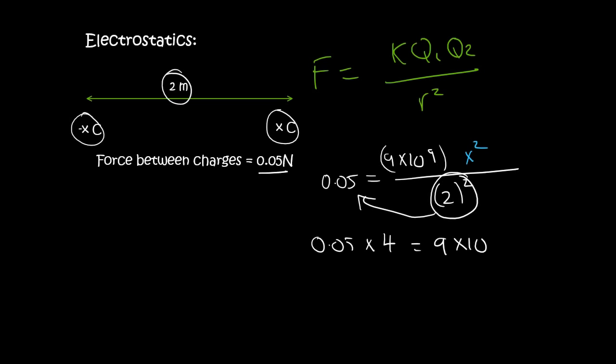And that's going to equal 9 times 10 to the 9 x squared. We can then divide this on the other side. So it'll be 0.05 times 4 over 9 times 10 to the 9 equals to x squared. And so that's going to give you 2.22 times 10 to the minus 11.